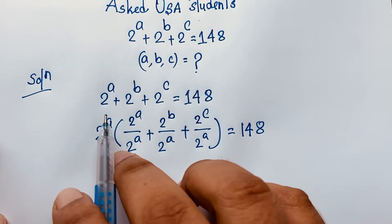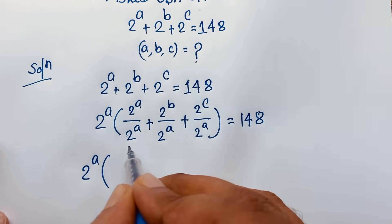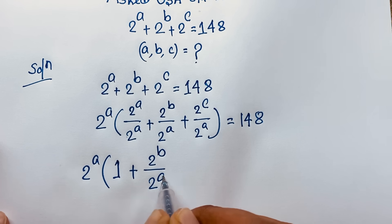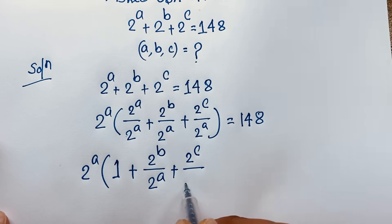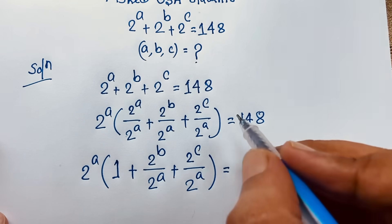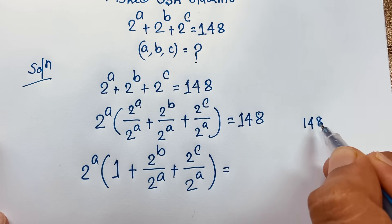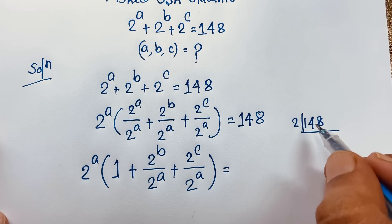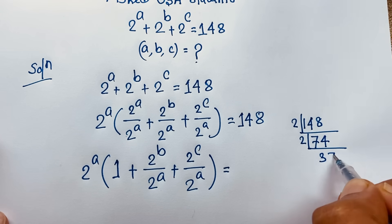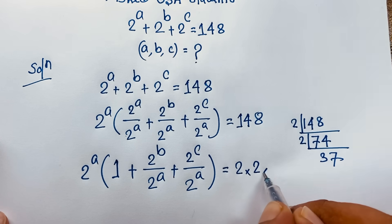Taking 2 to the power a common, it becomes 2^a times (1 + 2^b / 2^a + 2^c / 2^a) = 148. Now I find the factors of 148: 148 divided by 2 is 74, divided by 2 is 37, which is a prime number. So 148 = 2 × 2 × 37, which is 4 × 37, or 2 to the power 2 times 37.